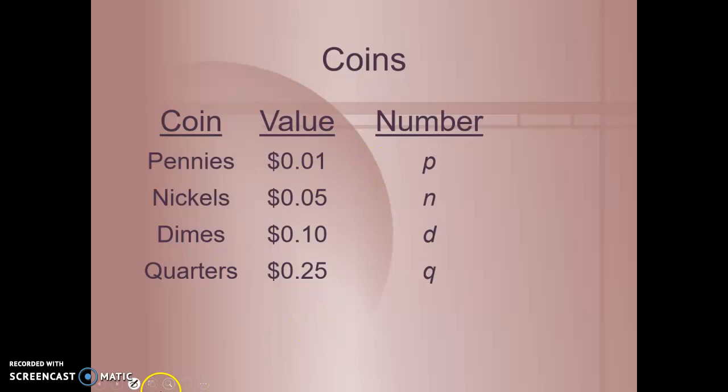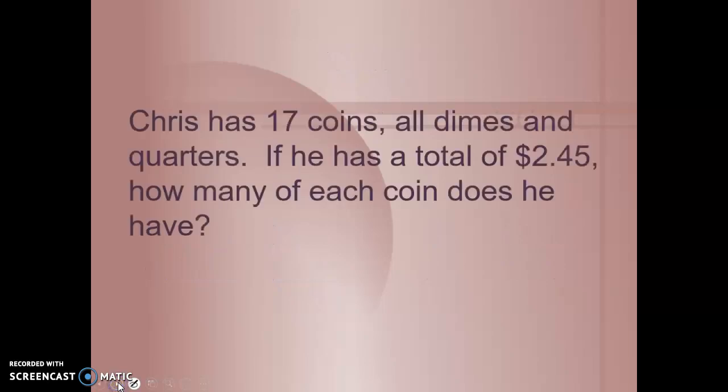Let's take a look at this problem. We have pennies that are worth 1 cent, represented with P, a certain number of pennies. Nickels that are 5 cents—we have N number of nickels. Dimes are 10 cents, we have D number of dimes. And quarters are 25 cents, we have Q number of quarters. The value of the pennies is 0.01p. So if we have one penny, our value would just be 1 cent. But if we had 100 pennies and multiply 0.01 times 100, the value would be $1.00.